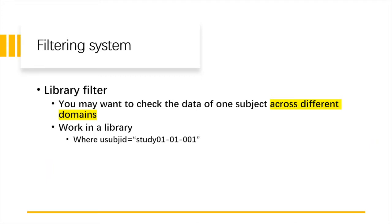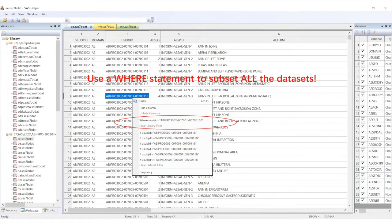Then there is the library filter. Library filter is for the keys. You may want to check the data of one subject across different domains. In that case, you can define a library filter. For example, if we define the use subject ID is study 0101, then all the datasets opened subsequently will apply this filter first. To distinguish the dataset filter and the library filter, where is for the library filter, if is for the dataset filter.